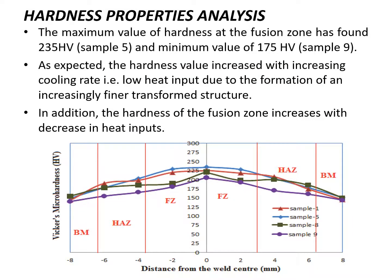In hardness properties, the maximum value of hardness at the fusion zone was found to be 235 HV for sample 5, and the minimum value of 175 HV in sample 9. As expected, the hardness value increases with increasing cooling rate, meaning lower heat input, due to the formation of an increasingly finer transformed structure. In addition, the hardness of the fusion zone increases with a decrease in heat input.